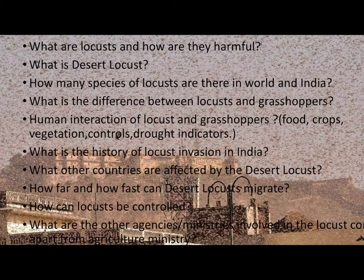What are locusts and how are they harmful? Locusts are small shorthorn grasshoppers. They are harmful because they generally exist in large groups — they breed, increase in number, and move in large colonies. The path they follow gets eaten bare, destroying crops, the economy, and vegetational cover, especially vegetable crops.